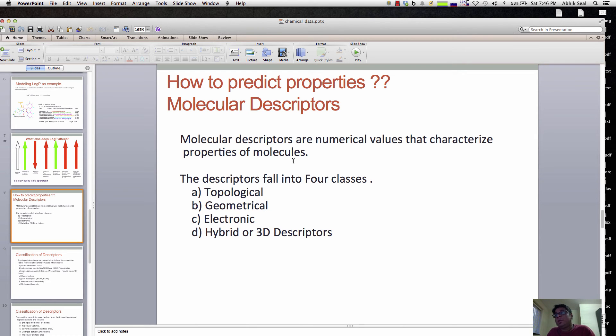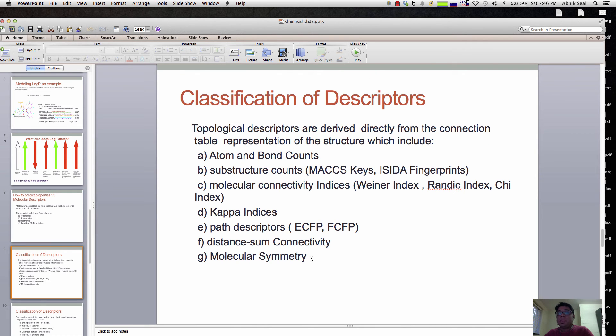There are various descriptors people use: topological, geometrical, electronic, and hybrid descriptors. Topological descriptors include atom and bond counts, total number of atoms and bonds, and substructure counts. If they find substructures in chemicals like MACCS keys, which are 166 keys, or ISIDA fingerprints, which are also substructure keys, they create a bit vector of 0 and 1 if they have a substructure in the main structure.